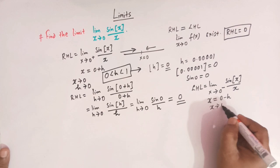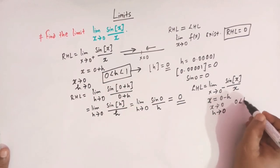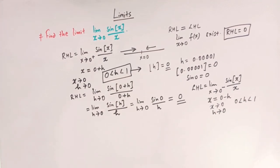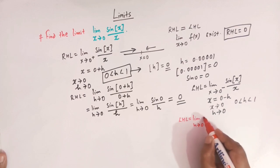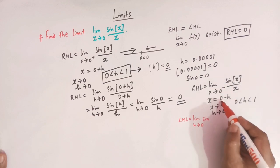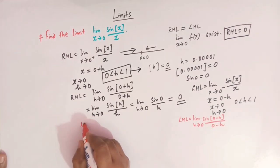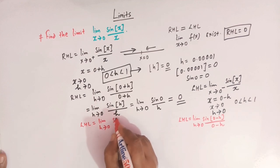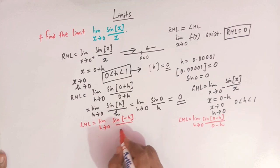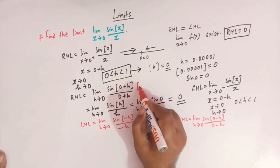When x tends to 0, obviously h tends to 0, and for h the condition holds that h lies between 0 and 1. So we can write the left hand limit as limit h tends to 0, of sine of greatest integer of minus h divided by minus h. Here again we cannot directly substitute h equals 0. Instead, we'll try to find out the value of the greatest integer of minus h.